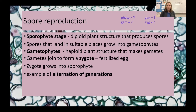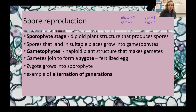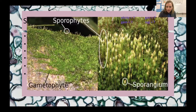Mosses take this a step further. We start with the sporophyte stage — a diploid structure that produces spores. This is just the little stem-looking thing with the ball on the end; it's diploid, has two sets of DNA, and produces spores by meiosis — dividing its two sets of DNA into one set. Those spores break free and land somewhere.